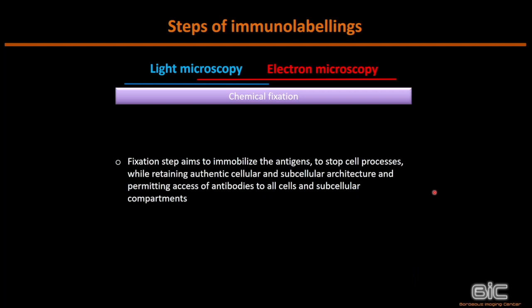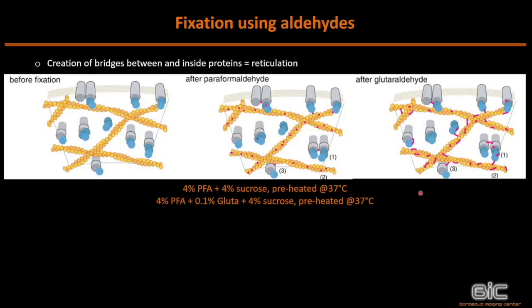Chemical fixation aims to stop cell processes, stop every degradation and movement, while keeping the 3D structure and organization of your cell compartments. We mainly use aldehydes for fixation, which create bridges between proteins and inside proteins. We have two types of aldehydes mainly used: paraformaldehyde and glutaraldehyde. The reticulation induced by glutaraldehyde is stronger than that induced by paraformaldehyde.